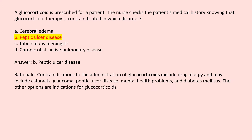Answer B. Peptic ulcer disease. Rationale: Contraindications to the administration of glucocorticoids include drug allergy and may include cataracts, glaucoma, peptic ulcer disease, mental health problems, and diabetes mellitus. The other options are indications for glucocorticoids.